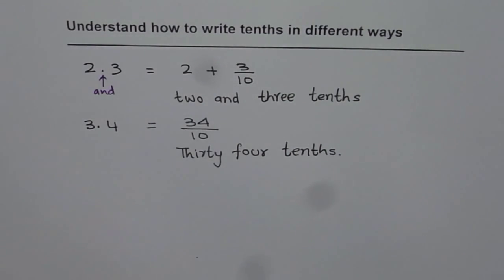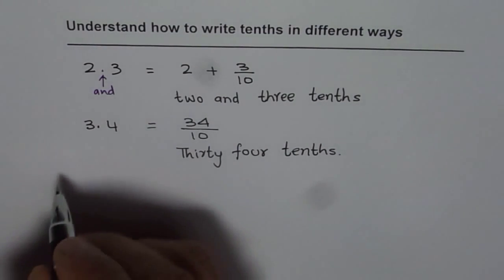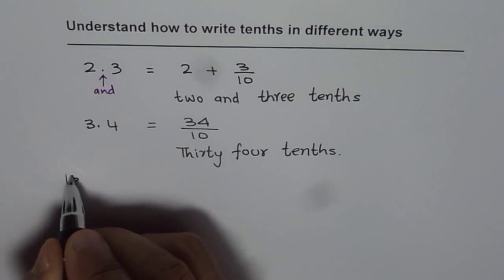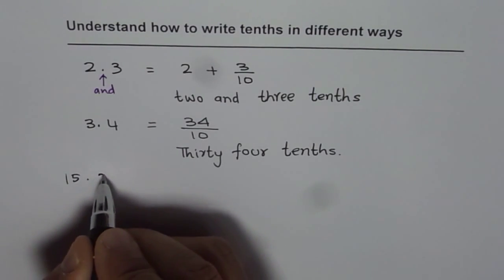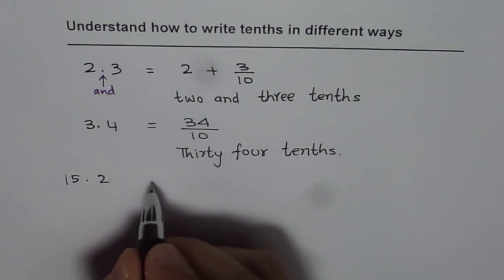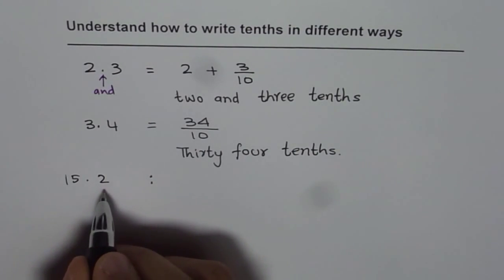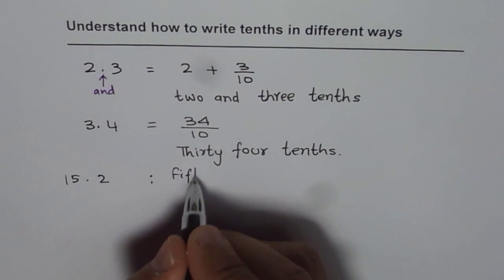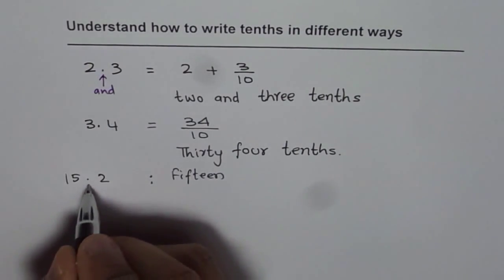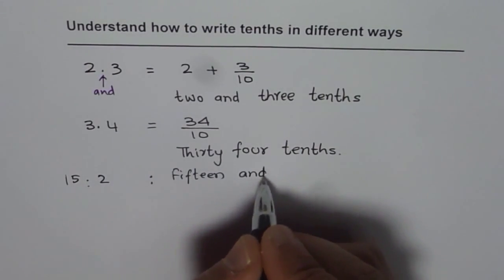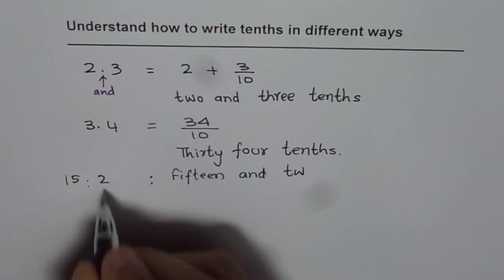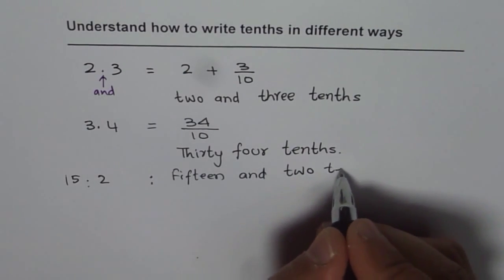If I have a number—let's take a bigger number this time—let's say 15.2. In that case, we can write 15.2 as 15 and 2 tenths, since 2 is in the tenth place.